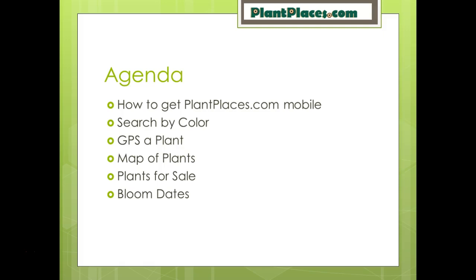Then we'll take a look at some of the more popular features: first, the ability to search for plants by color using either your phone's camera or the image gallery on your phone. Then we'll look at how to GPS a plant and look at your sustainability report card. We'll also look at how to see a map of your plants, both on the device and on the PlantPlaces.com website. The app can also post plants for sale and record bloom dates, but we'll cover those in a separate video.